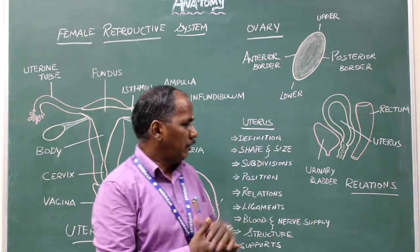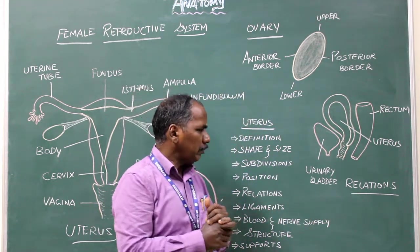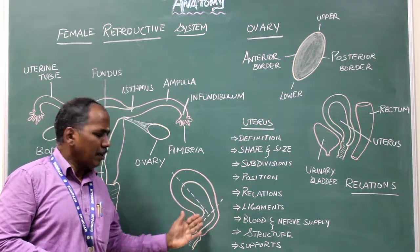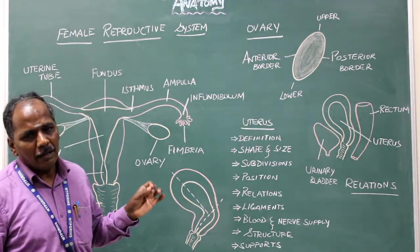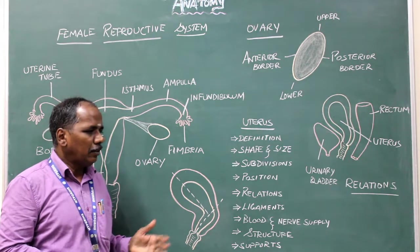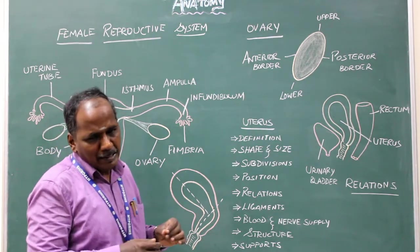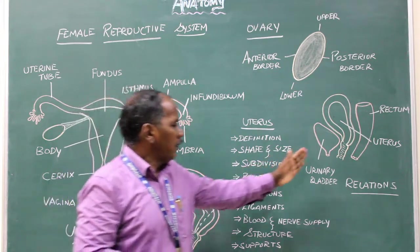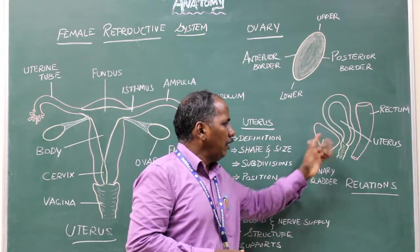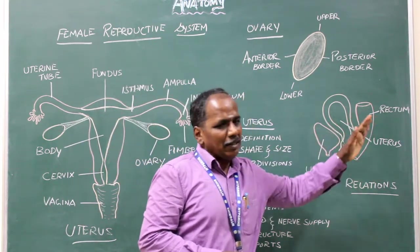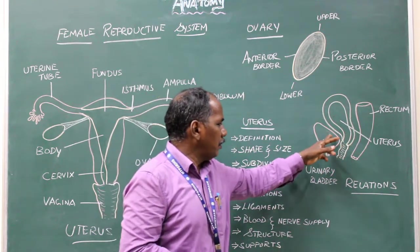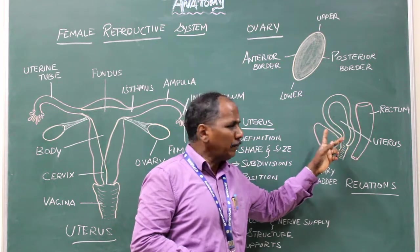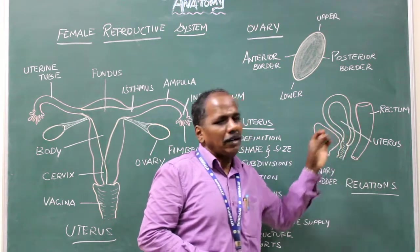Uterus — definition. It is a pear-shaped muscular organ situated in the true pelvis, between the urinary bladder anteriorly and the rectum posteriorly.